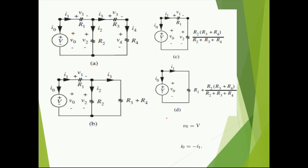Let us talk about the same with the help of an example. Let us assume figure A is given to us, in which we have the total voltage V, and resistors R1, R2, R3, and R4 — four resistors connected in the circuit. The respective voltages are V1, V2, V3, and V4, whereas the respective currents are I1, I2, I3, and I4. I0 is the value of total current flowing in our circuit.